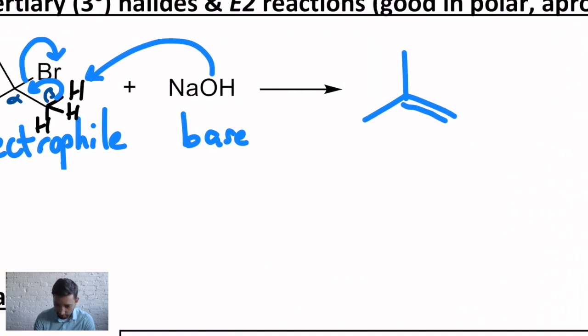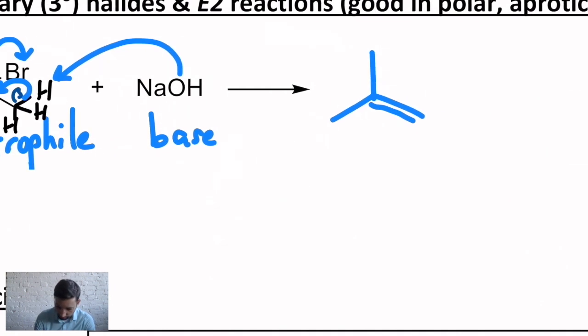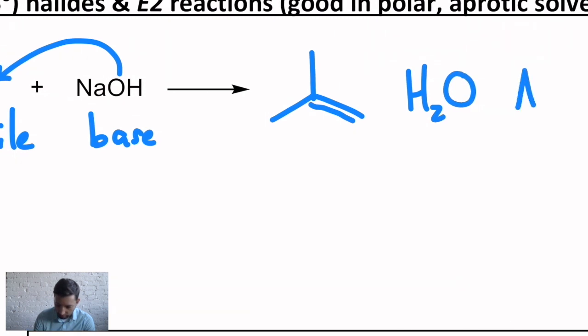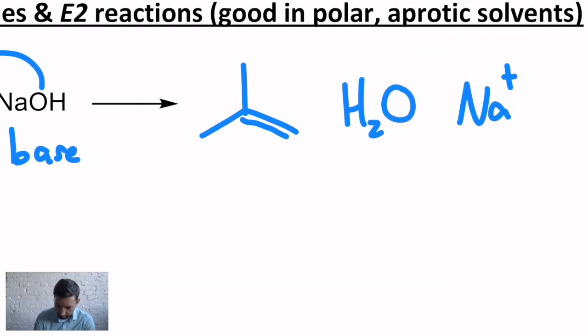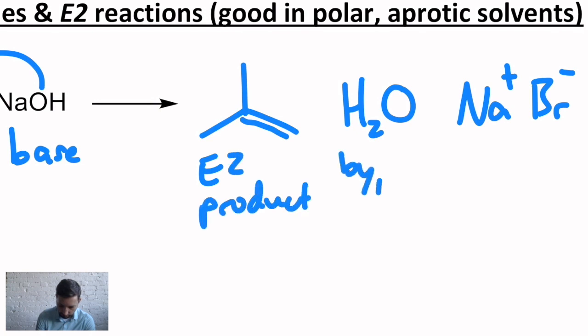What did we make as a result? We made water. And then we also have our counterion, sodium, which is ionically bonded to the leaving group, the bromide. So we have the E2 product. Water we'll call our byproduct. And then bromide is our leaving group.